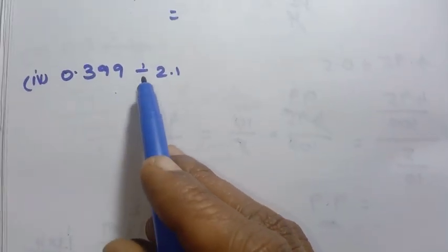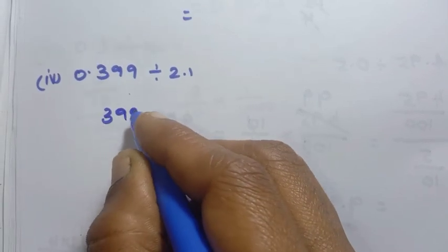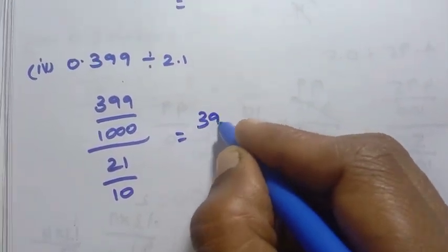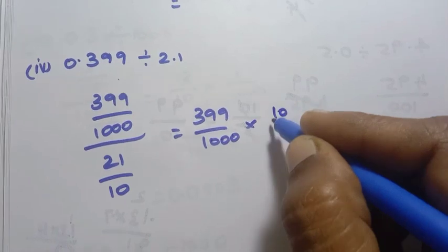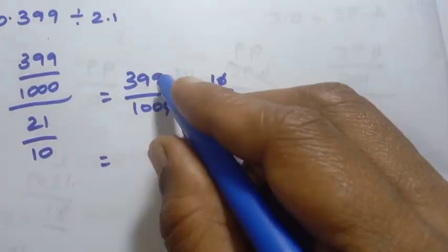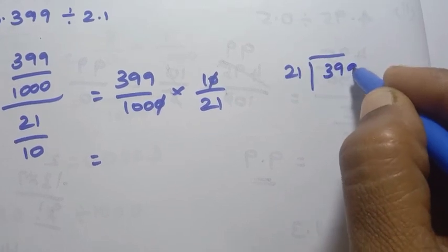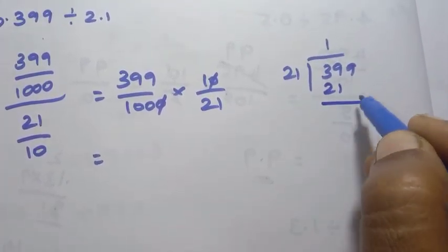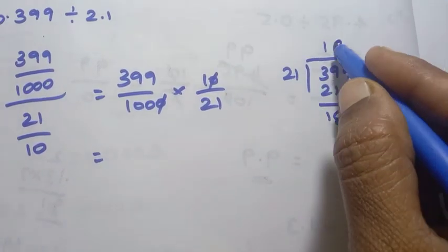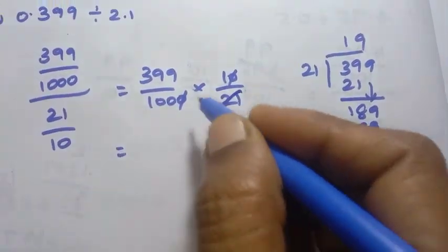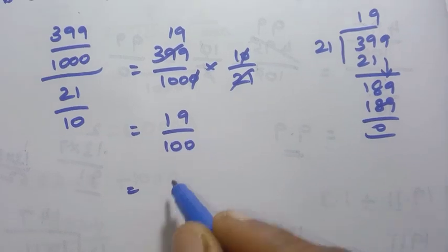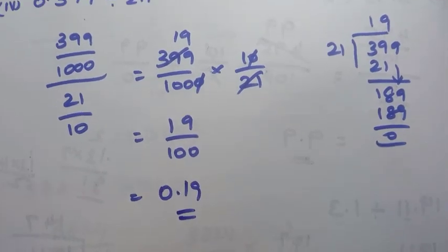Fourth sum: 0.399 divided by 2.1. 0.399 has 3 decimal places: 399 by 1000. 2.1 has 1 decimal place: 21 by 10. So 399 by 1000 into 10 by 21 — 10s cancel, giving 399 by 21 into 1 by 100. 399 divided by 21 equals 19. So 19 by 100: 2 decimal places gives 0.19 as the answer.